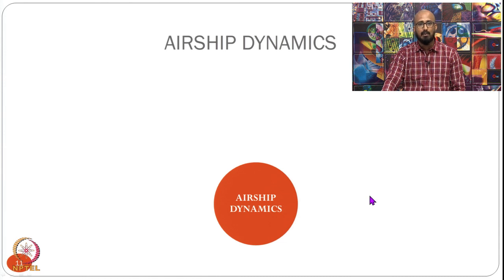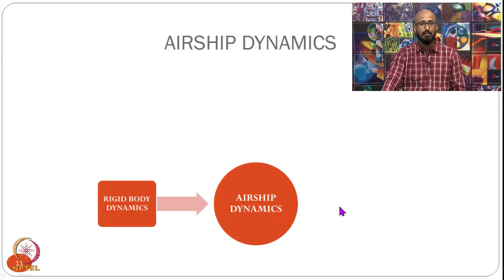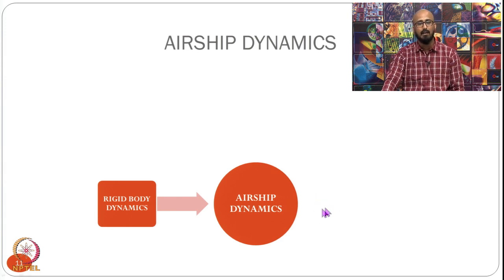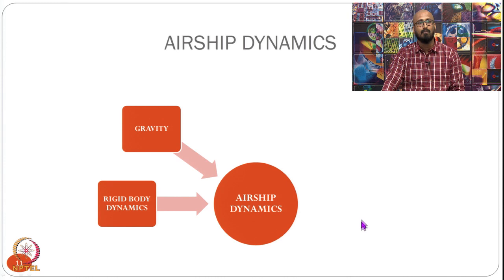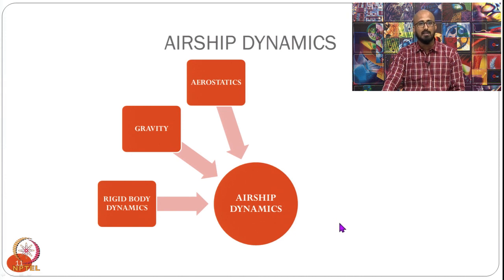Let us look at all forces and moments acting on the airship. The primary component is mass and inertia, required to compute accelerations. We also have rigid body dynamics due to coupling between linear and angular velocities — nothing to do with aerodynamics, purely from that coupling. Then there is gravity, which always acts normal to the surface toward the center of the earth, and aerostatics, which is the buoyancy force — determined from airship volume, lifting gas density, and ambient air density — acting opposite to gravity.